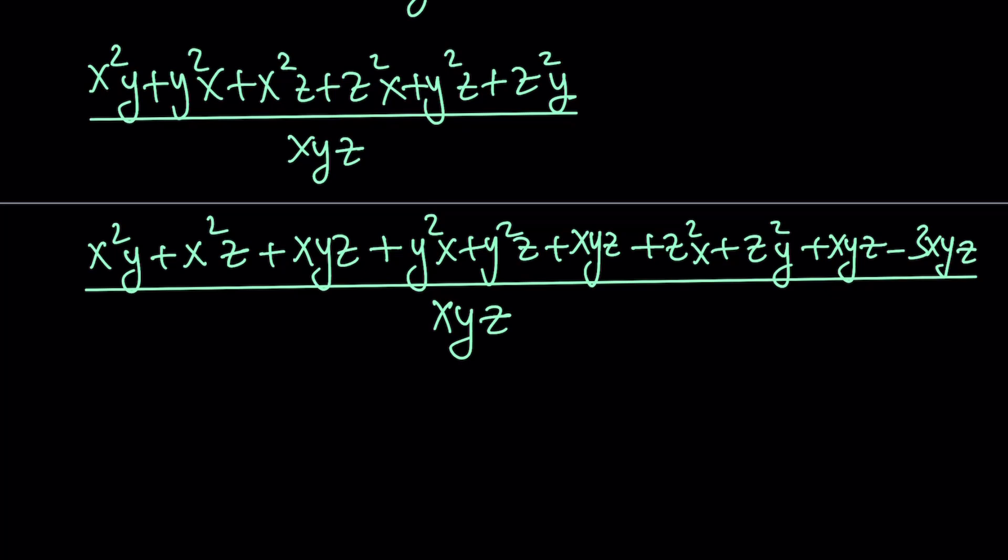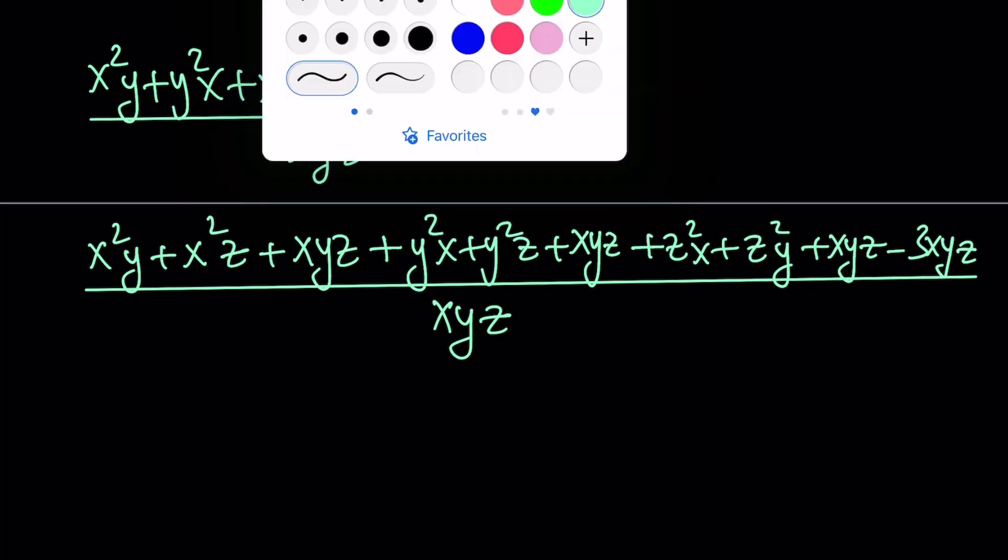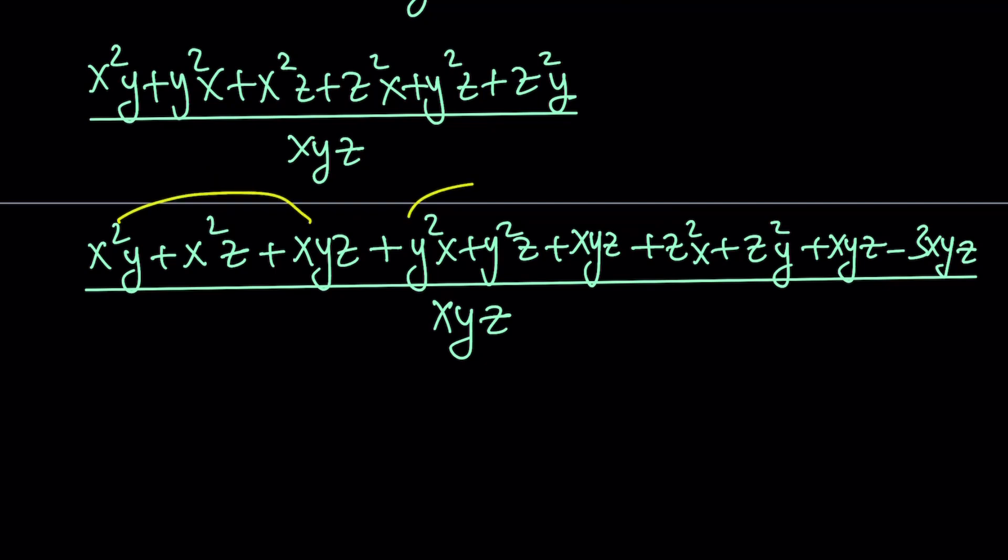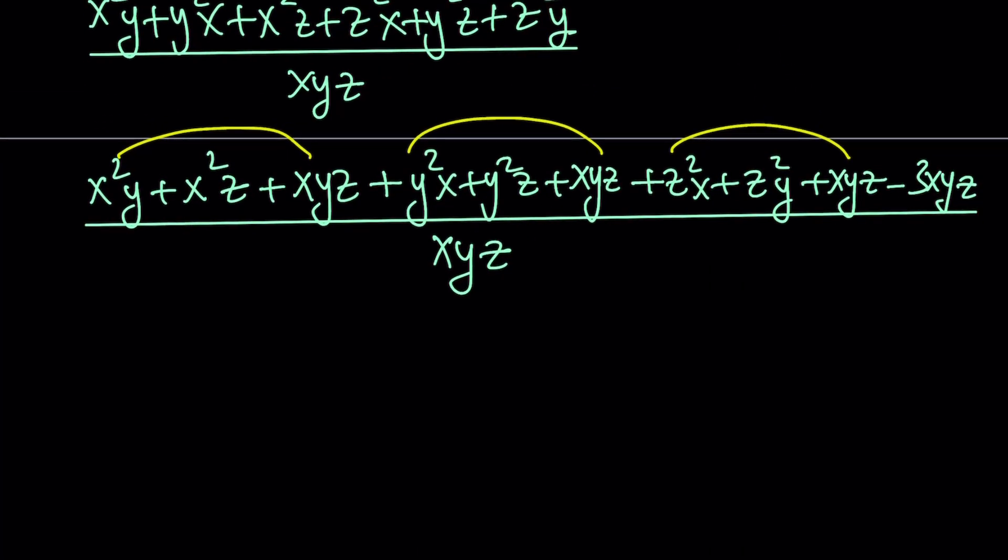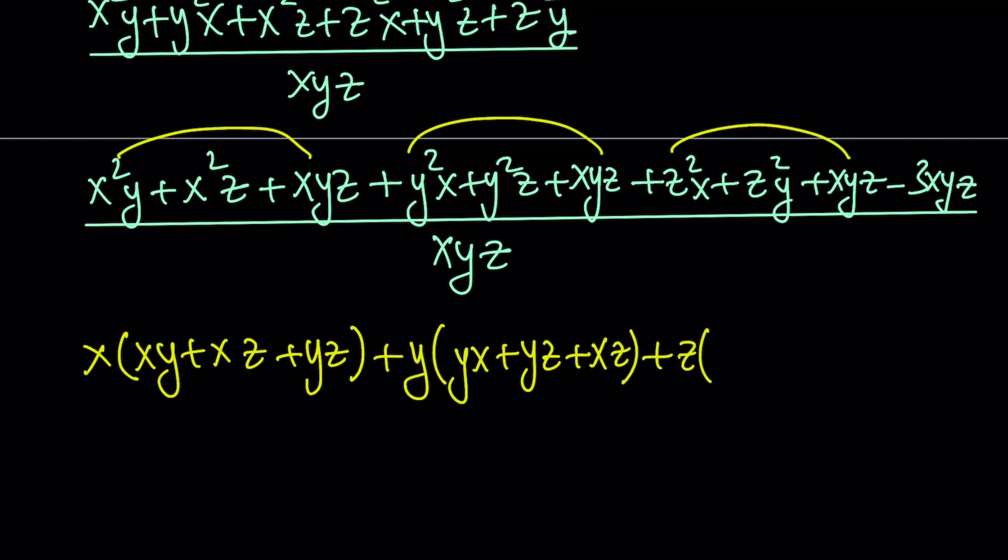And here's the goal. I want to factor this by grouping. So it would make sense if we group them like this. And of course negative 3xyz is going to be left outside. And we're going to take care of that later. So if you consider the first group, you notice that x is a common factor. So we can write this as x times (xy + xz + yz). And then the second group, we're going to take out a y. And that's going to be y(yx + yz + xz). And then finally z is going to give us z(zx + zy + xy). Minus 3xyz.